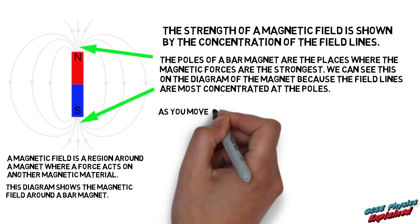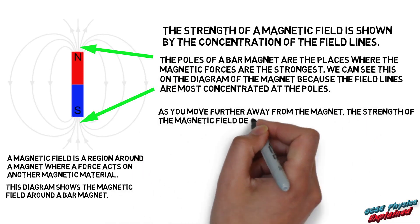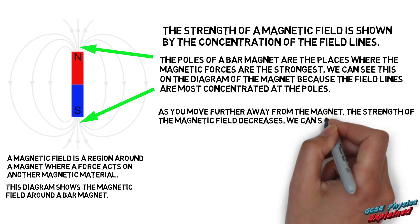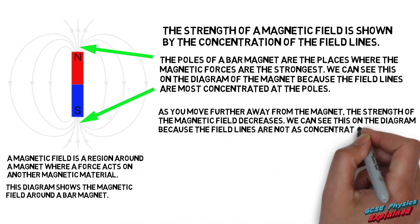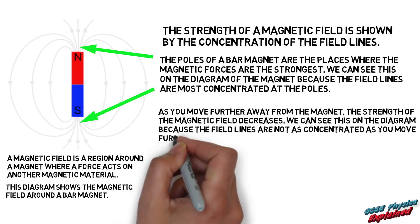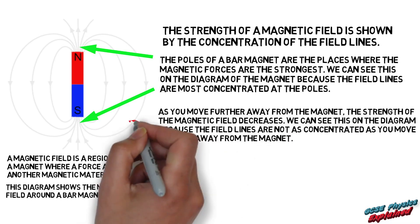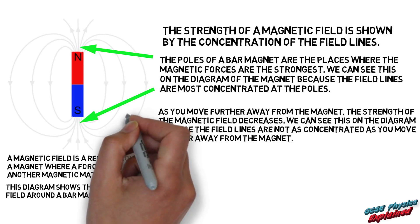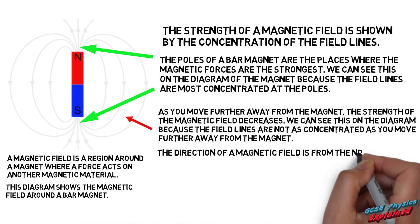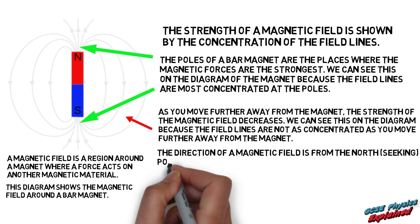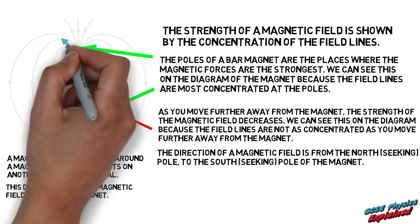As you move further away from the magnet the strength of the magnetic field decreases. We can see this on the diagram because the field lines are not as concentrated as you move further away from the magnet. The direction of a magnetic field is from the north seeking pole to the south seeking pole of the magnet.